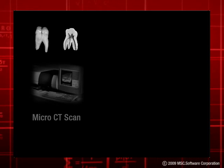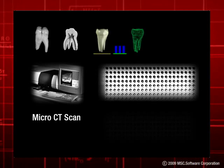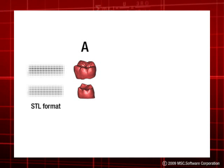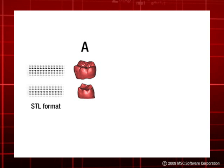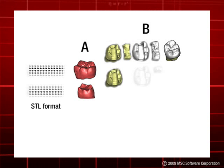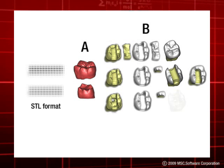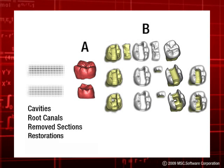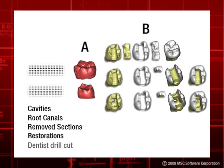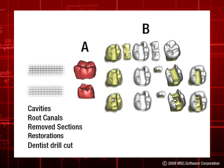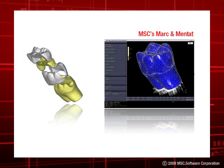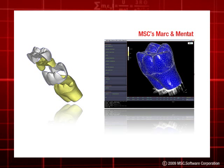For example, today extremely accurate 3D geometry is obtained of the extracted tooth using micro CT scans. This geometry in STL format is then imported into a series of other tools that: A. render the scanned objects into more appropriate 3D workable geometrical representations, and B. split the model up into surfaces that can be reassembled easily to create different geometrical versions of the tooth. This helps to model teeth with cavities, root canals, and removed sections. It also allows one to emulate dentists' drill cuts. Once this is done, these new STL files are then imported into MSC Software's Mentat or Patran for the entire volume to be meshed for numerical modeling and analysis.